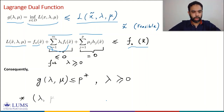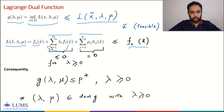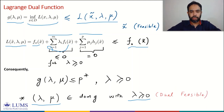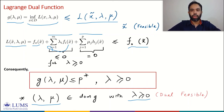Lambda-mu pairs in the domain of g with λ ≥ 0 are referred to as dual feasible variables. This remarkable property—that the Lagrange dual function serves as a lower bound on the optimal value of the primal problem—is the foundation of duality theory or the duality principle.